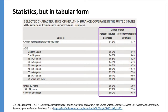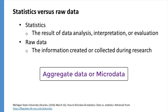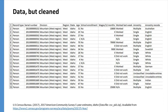Since this table includes the actual percentages associated with each variable, we could potentially transform this information into a different type of visualization. In comparison, raw data is the information created or collected during research. Data can be analyzed and interpreted to create new knowledge and is the information from which statistics are created. And as we talked about in video 1, raw data can appear as aggregate data or micro data. Compared to the statistics screenshots, this image is definitely micro data, as it presents individual records.